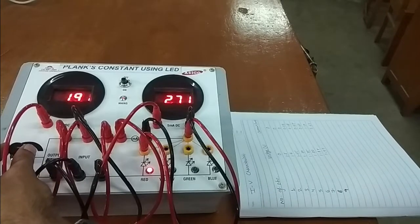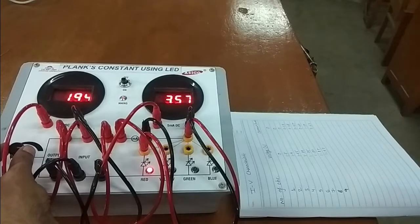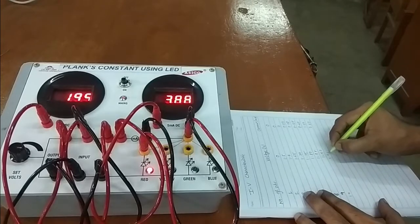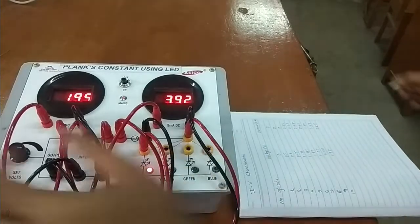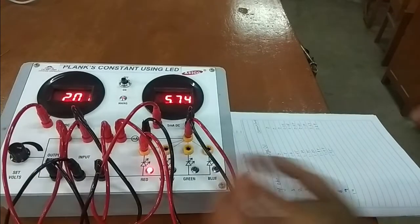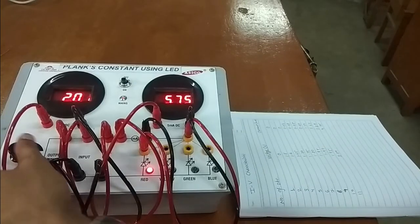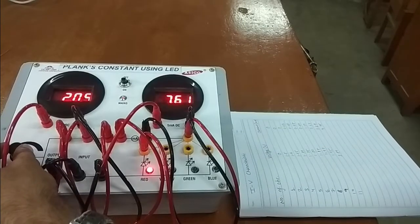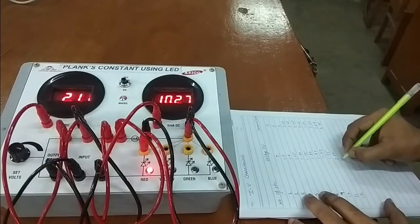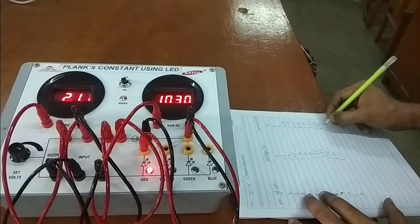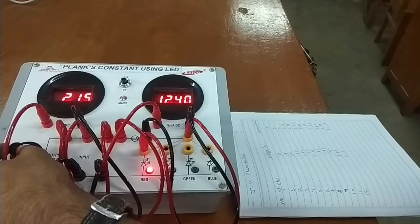Make it 2 because we have crossed the knee voltage. Let's note down 1.95. 1.95, current is 3.88. Now voltage is 2.1 and current is 10.27. You can easily locate it from here 10.27 or 10.30. Current is fluctuating here. Now I am making it 2.2.